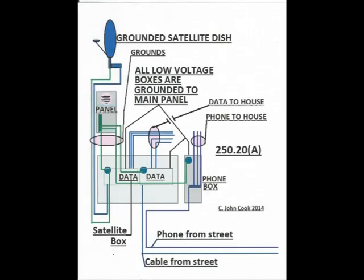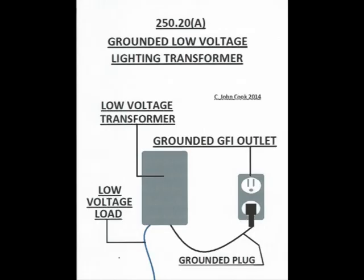So, in essence, article 250.20 part A is aimed at data and communication wiring and some low voltage transformer applications, like outdoor lighting transformers. Make a special note of what I say next.